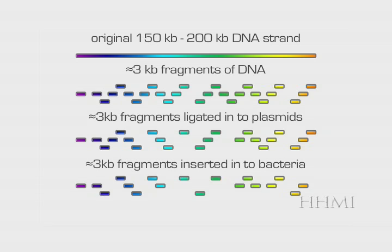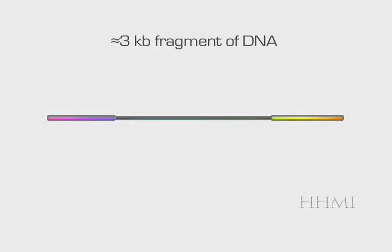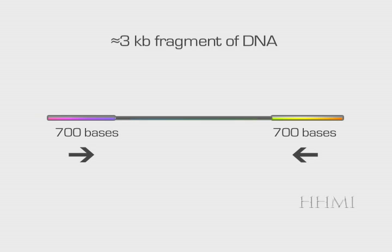Then we inserted the plasmid into bacteria. Again, not every plasmid entered a bacterium, and we lose a little information. Finally, when we were shearing the original DNA strand, current technology allows us to read about 700 bases at a time. If we have a segment that is 3,000 base pairs long and we read 700 bases from either end, that means we only read about 1,400 bases of 3,000 base pairs, or roughly half of the target DNA.